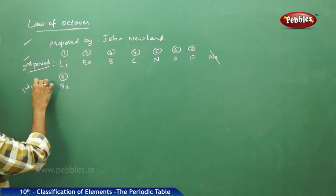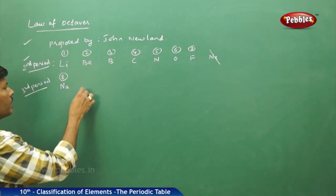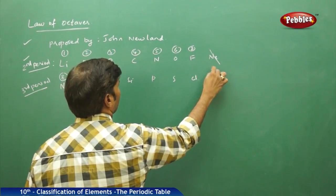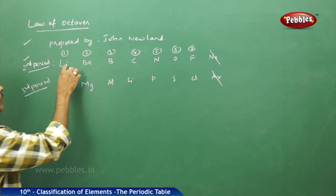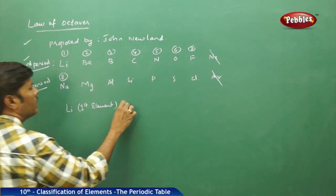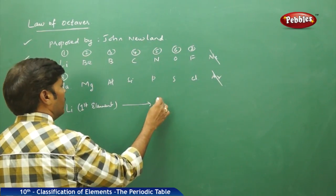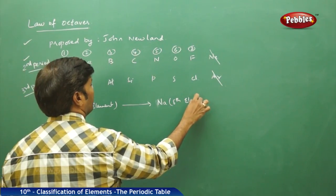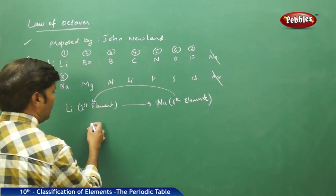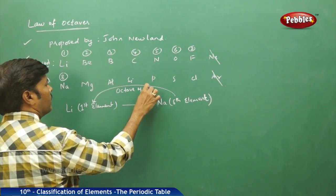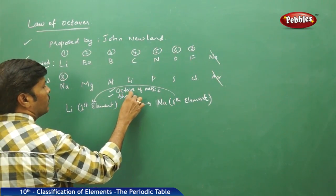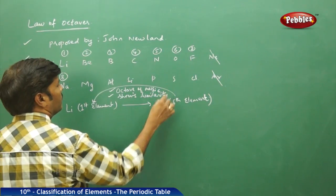In the third period, the starting element is sodium, followed by magnesium, aluminum, silicon, phosphorus, sulfur, chlorine — and argon is an exception. The eighth element starting from lithium is sodium. This means the eighth element is always in octaves of music, which resembles similarity in properties.